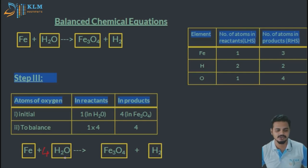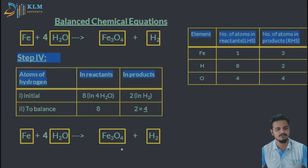Now that oxygen is balanced, we'll move to the next step. You can see here when you multiplied water molecule by four, you also increase the number of hydrogen molecules. It was two before, now it has become eight. But in the right-hand side it is still two because we haven't made any changes in the right-hand side.